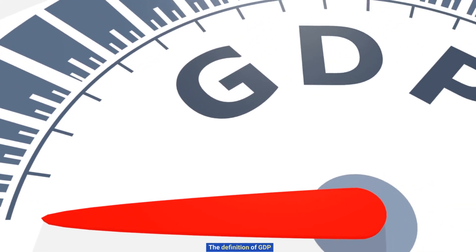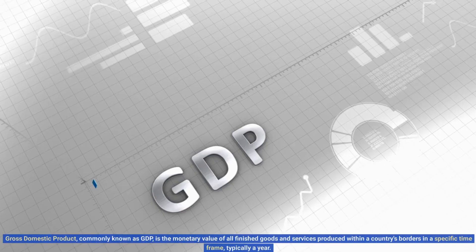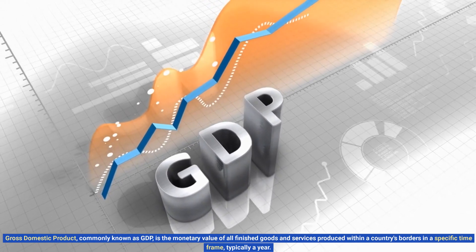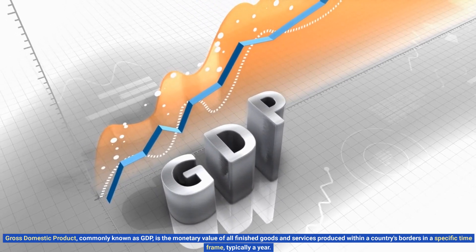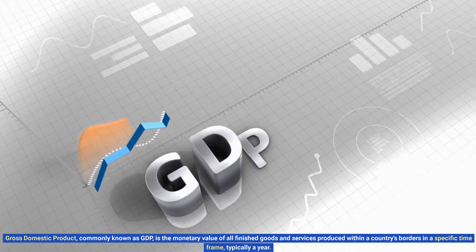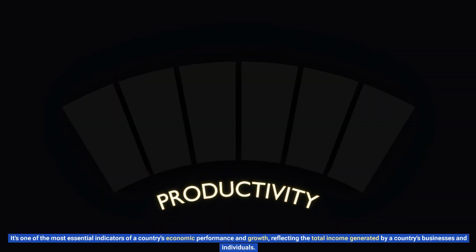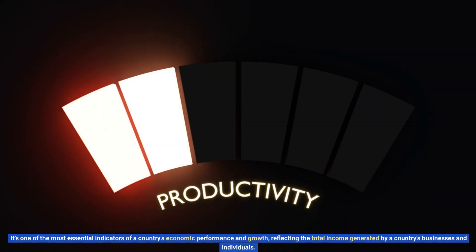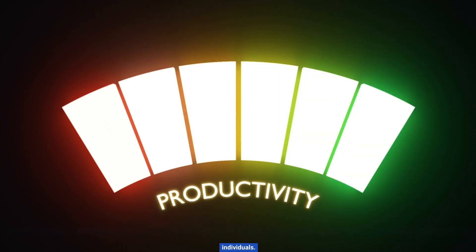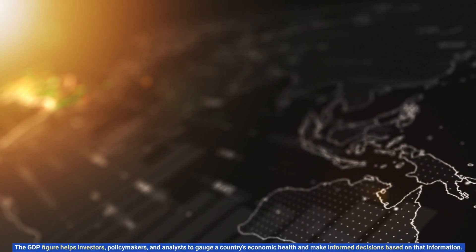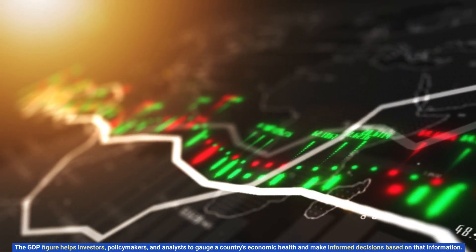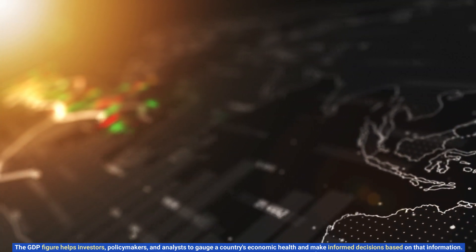The definition of GDP: Gross Domestic Product, commonly known as GDP, is the monetary value of all finished goods and services produced within a country's borders in a specific time frame, typically a year. It's one of the most essential indicators of a country's economic performance and growth, reflecting the total income generated by a country's businesses and individuals. The GDP figure helps investors, policymakers, and analysts gauge a country's economic health and make informed decisions.